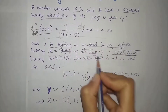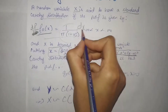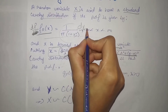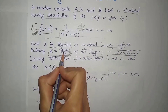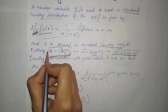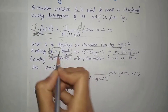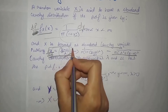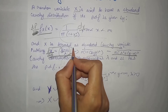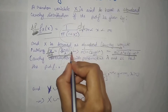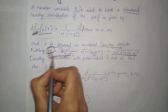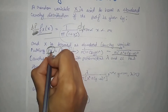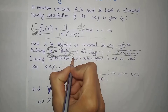Now we have this value put in x, and we have to write in terms of dy. So we have to write the dx value in terms of dy. Differentiating both sides with respect to y, we get dx by dy. Differentiating y with respect to y, we have 1 divided by lambda, so dx equals dy divided by lambda.